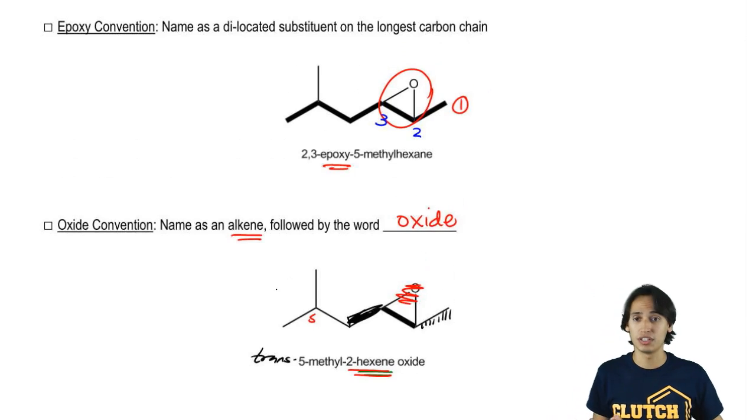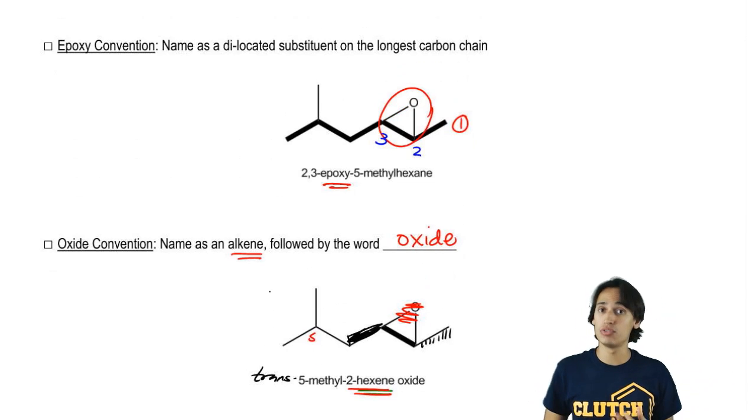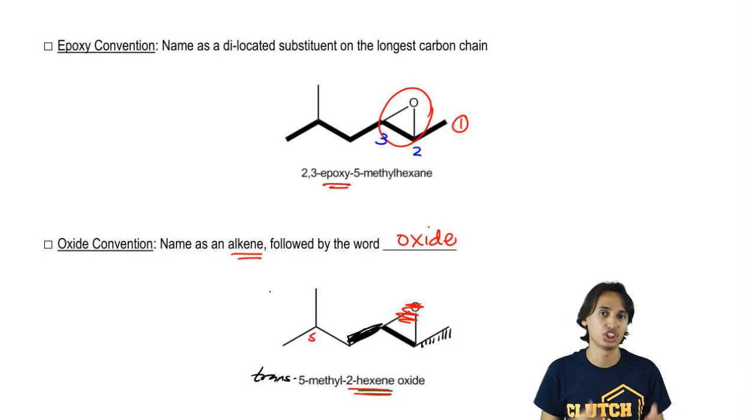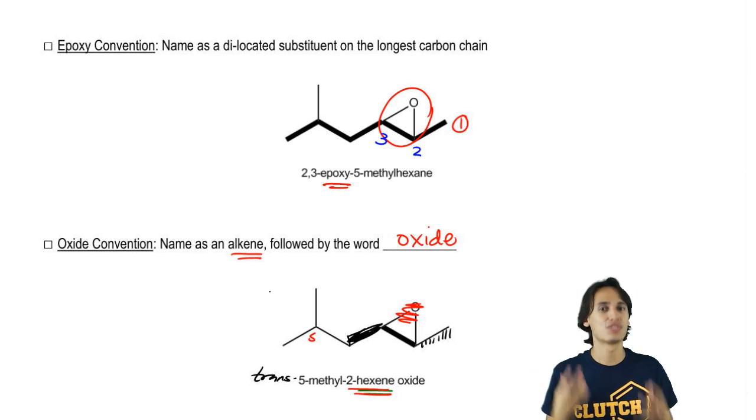Notice that once again, we didn't include stereochemistry. There was no wedge and dash. But if there was one, then you'd be responsible for that. So it was kind of a mouthful, lots to remember there. Let's do some practice problems and see if we can get more comfortable naming epoxides.